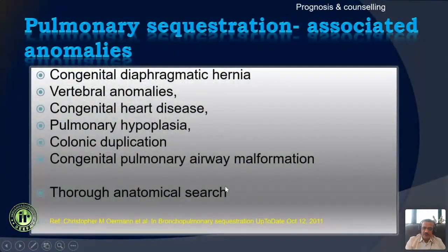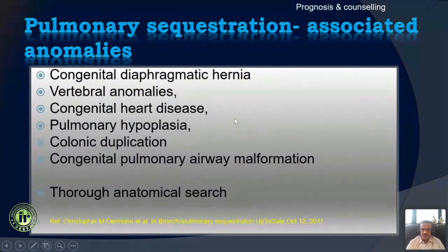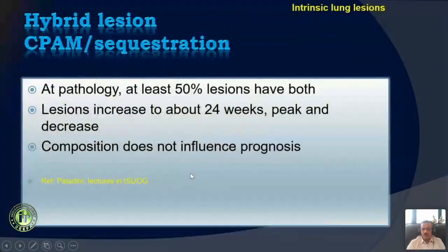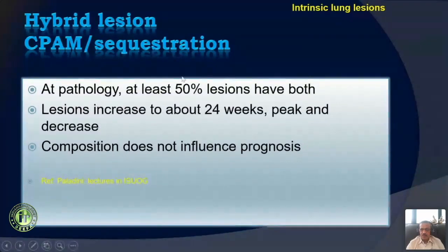With sequestration, we can have other associated anomalies like diaphragmatic hernia, vertebral anomalies, congenital heart disease, pulmonary hypoplasia, colonic duplication, etc. Therefore a thorough search is very often required. Almost sometimes 50% of these lesions can be hybrid, and it is very difficult to differentiate between them.